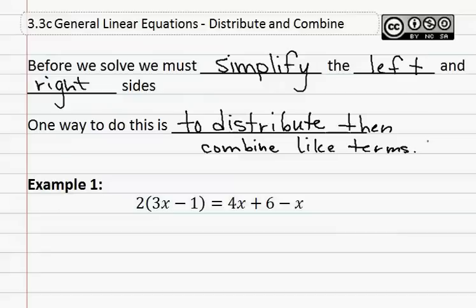Remember, order of operations tells us to multiply, then add or subtract. Distribute is multiply, and combine like terms is add or subtract. Therefore, we must distribute before we combine like terms. We will look at this in example one.